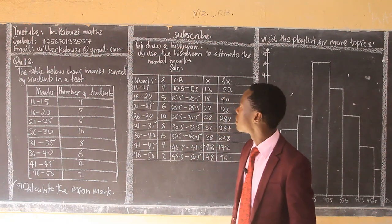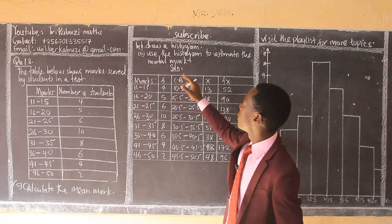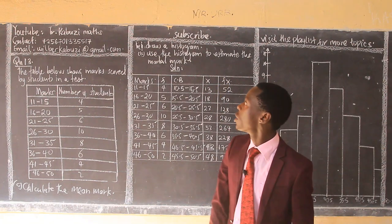Find the mean mark, then draw a histogram, use the histogram to estimate the modal mark.